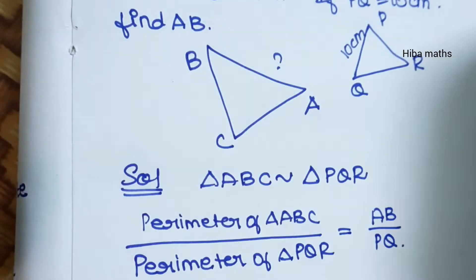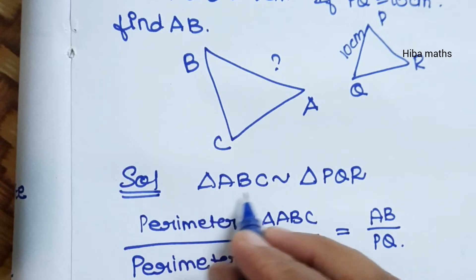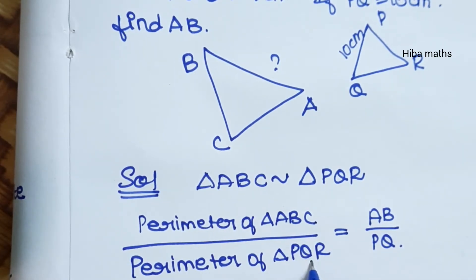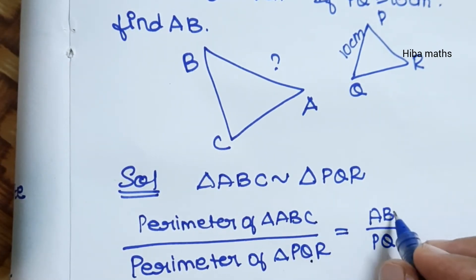So the condition is that triangle ABC and PQR are similar. Perimeters of ABC and PQR are equal to corresponding sides.